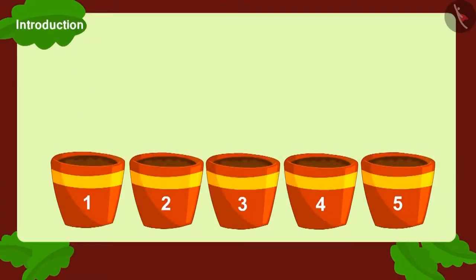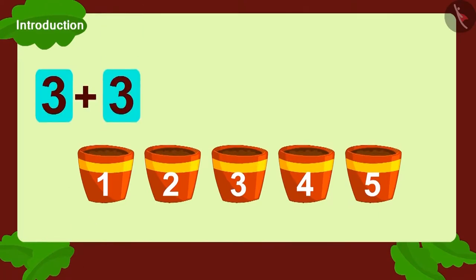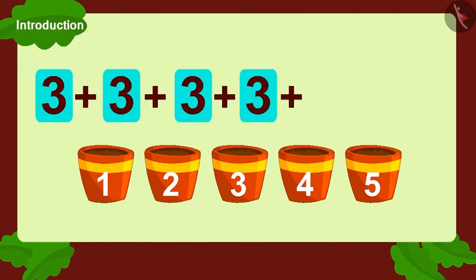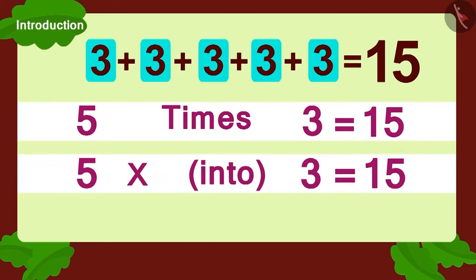Children, if Babban had planted three seeds each in five pots, then can you write this using multiplication? We can write it as three plus three plus three plus three plus three equals fifteen. Or five multiplied by three.